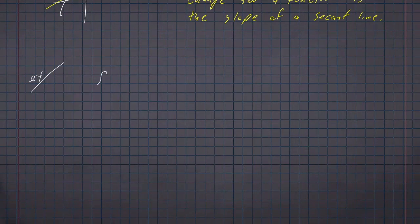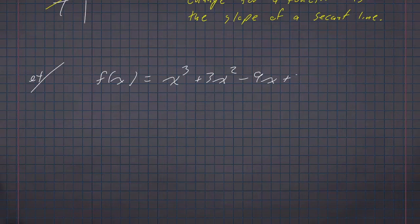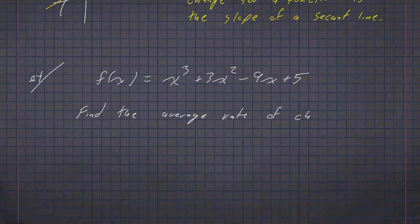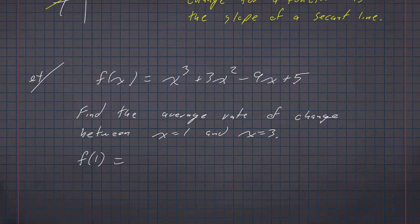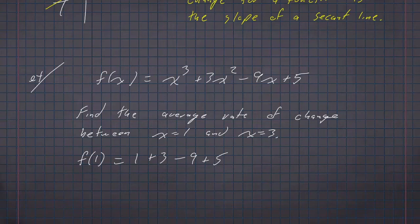For example, let's consider the function f of x equals x cubed plus 3x squared minus 9x plus 5. If I want to find the average rate of change for this function between x equals 1 and x equals 3, I simply evaluate. f of 1 is 1 plus 3 minus 9 plus 5. 1 plus 3 is 4, 4 minus 9 is negative 5, and negative 5 plus 5 is 0.